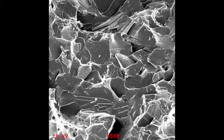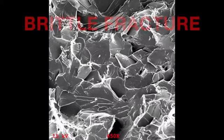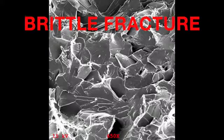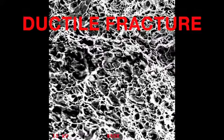The sample whose SEM image looks very jagged and covered in fine edges and sharp points was identified to be the sample which experienced brittle fracture, and the sample whose surface looks like a tangled spider web of pits and holes was identified to be the sample which underwent ductile fracture.